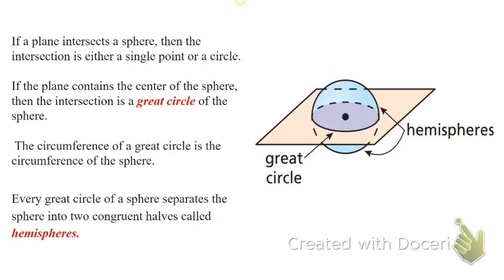A great circle: if a plane intersects with a sphere, then the intersection is either a single point or a circle. If the plane contains the center of the sphere, then the intersection is called the great circle. If it doesn't contain the center, then it's just a regular circle. And if it just touches, it's a point. And if you cut it in half at where the center is, it's a hemisphere.